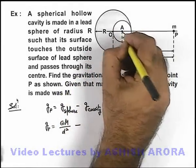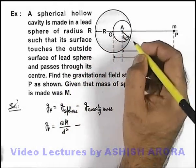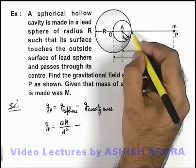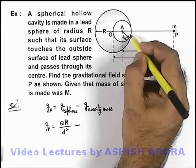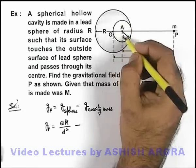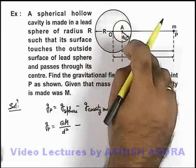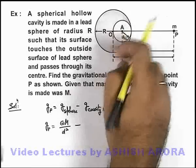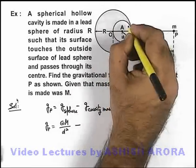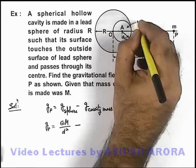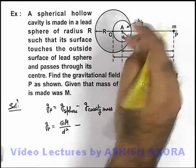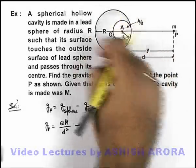If we look at the volume of the cavity, the cavity radius is R by 2. That means its volume is 4 by 3 pi R by 2 whole cube, so this will be 1/8th of that of the complete sphere. As mass is uniformly distributed in its volume, the mass enclosed within this region would be M by 8.